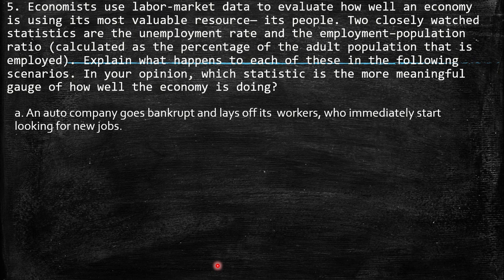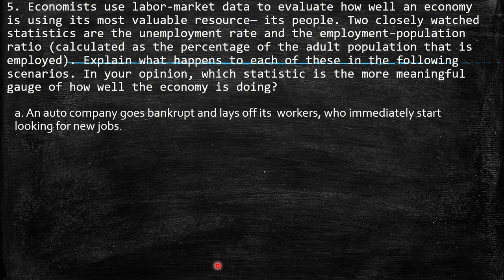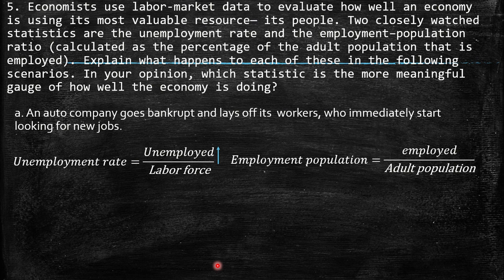A: an auto company goes bankrupt and lays off its workers who immediately start looking for new jobs. The number of unemployed increases while the labor force remains the same, so the unemployment rate increases. Regarding the employment-population ratio, fewer people are employed while the adult population remains the same, so it decreases.